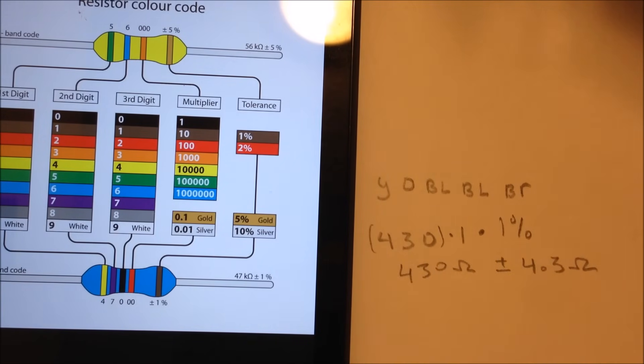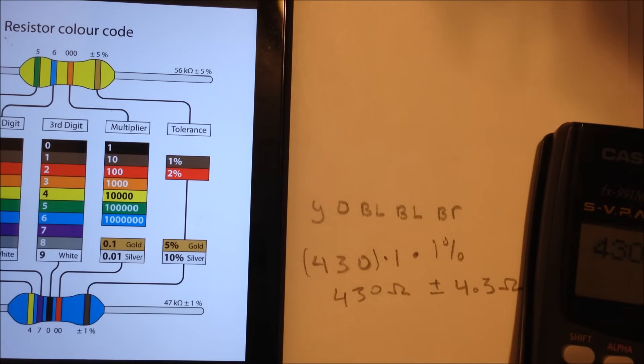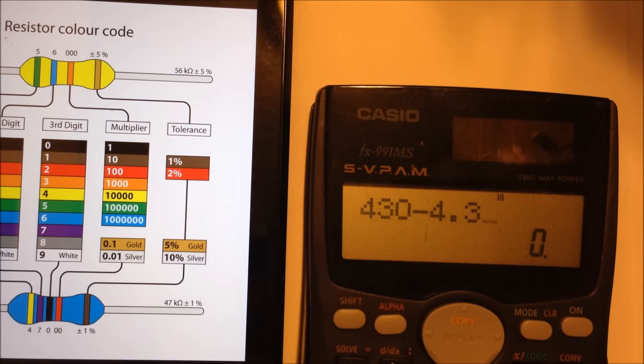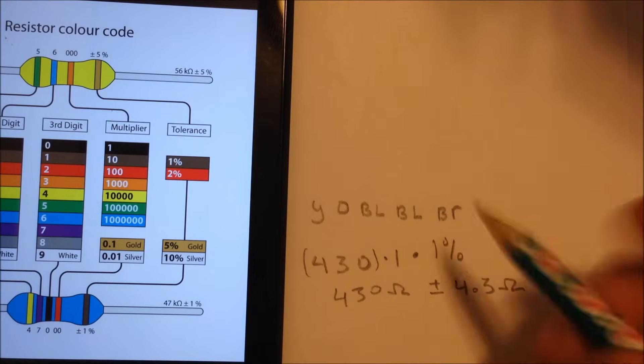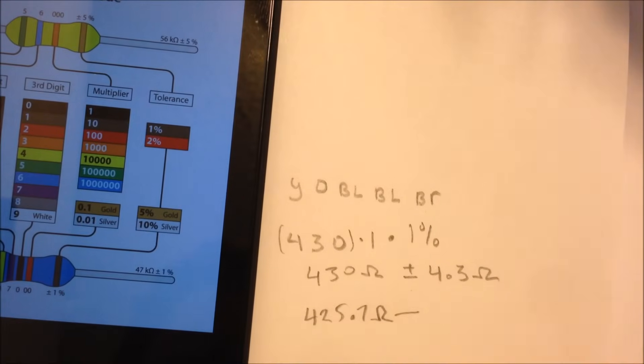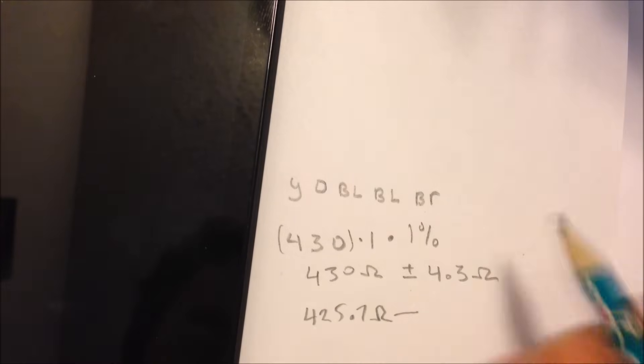So now if we multiply that out, we just get 430 ohms times our tolerance, which is 1%. So this resistor will be 430 ohms plus or minus 4.3 ohms. And then to confirm that, we'll just do this calculation here first. So 430 minus 4.3 is 425.7, so 425.7, and we'll just change this to a plus here now, 434.3. So our resistor value should be within that range there.